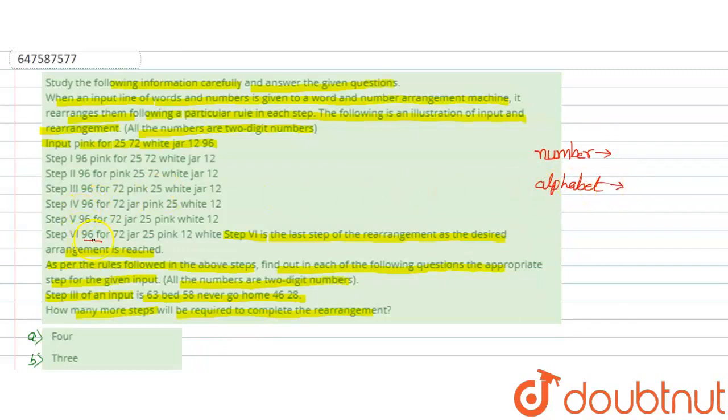The numbers are placed in descending order: 96, 72, 25, 12. And alphabetically, looking at jar, pink, white, these are arranged in ascending order.